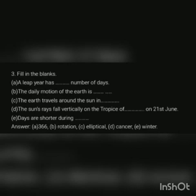Fourth: The sun's rays fall vertically on the Tropic of blank on 21st June. Its answer is cancer. Fifth: Days are shortest during blank. Its answer is winter. Thank you.